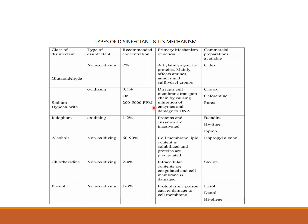Sodium hypochlorite (e.g., Clorox) is an oxidizing agent at 0.5–2%, which disturbs the cell membrane and deactivates proteins. Iodophores such as Betadine are also oxidizing. Alcohol is non-oxidizing at 60–90%, destroying cell membrane lipid components; isopropyl alcohol is used. Chlorhexidine (e.g., Savlon) is non-oxidizing at 2–4%, coagulating intracellular contents and damaging the cell membrane. Phenolic compounds are non-oxidizing at 1–3% and damage the cell membrane; Lysol and Dettol are common examples.